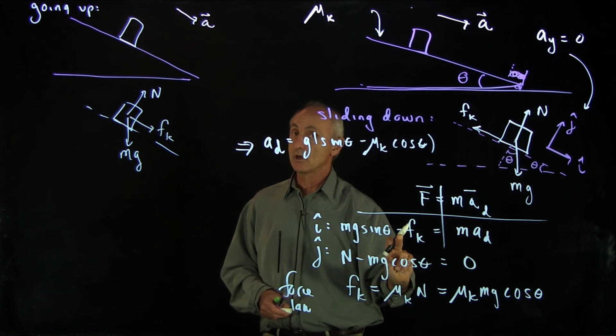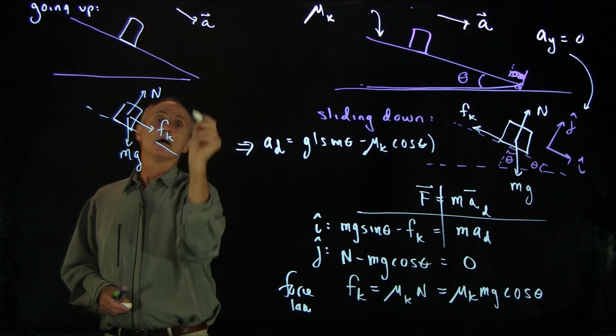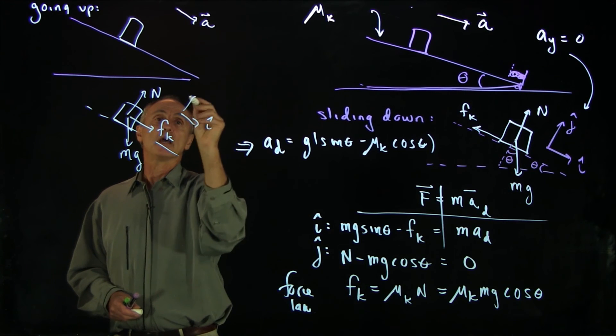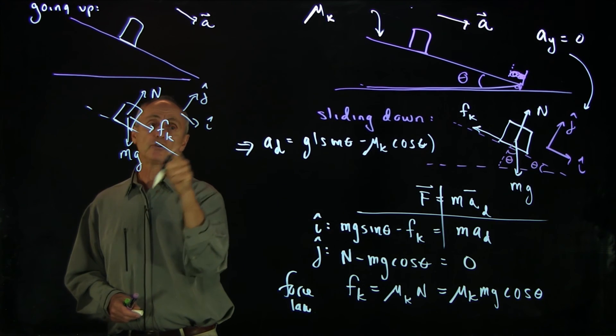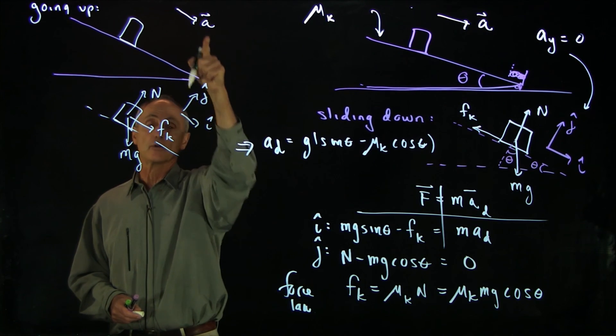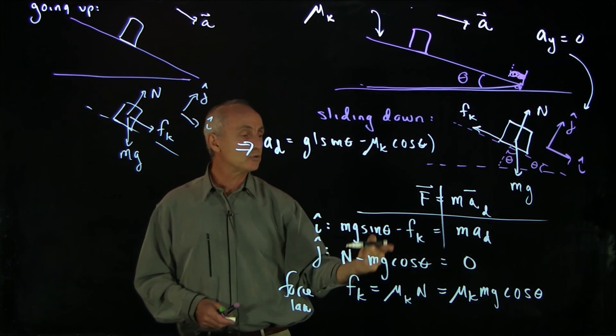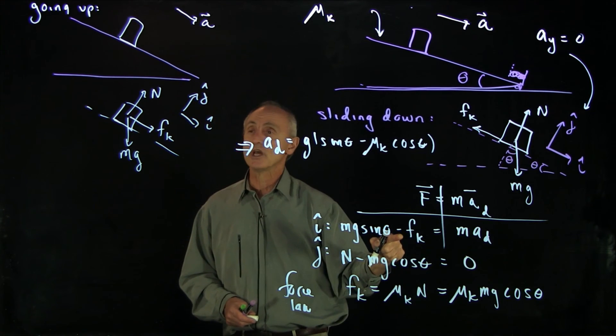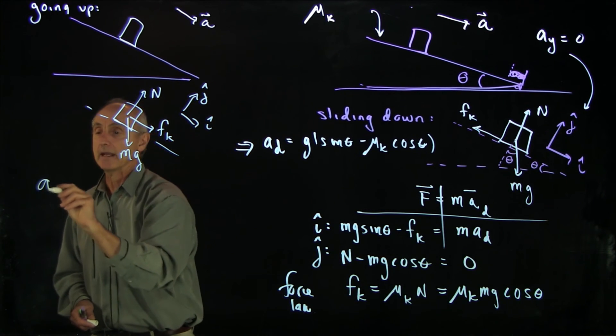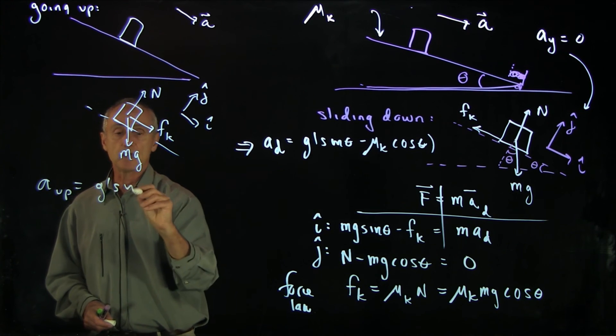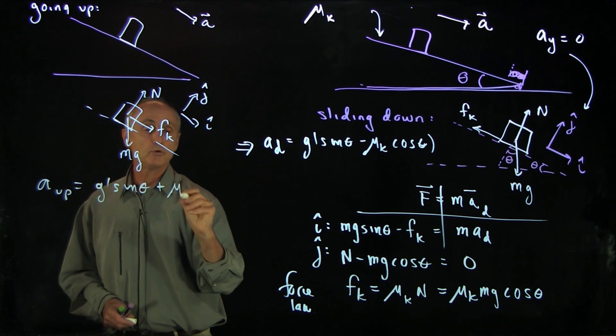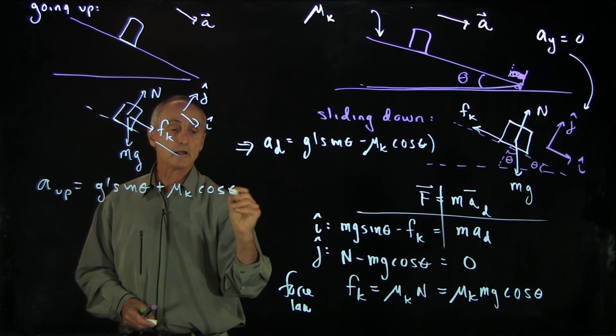If I choose my i-hat and j-hat in the same direction, notice both of these forces have a positive component in the i-hat direction, so the acceleration will be down. Rather than do all the algebra, all I'm doing is changing the sign, and I get that a_up is equal to g sine theta plus mu k cosine theta.